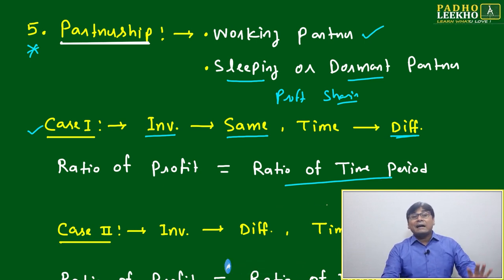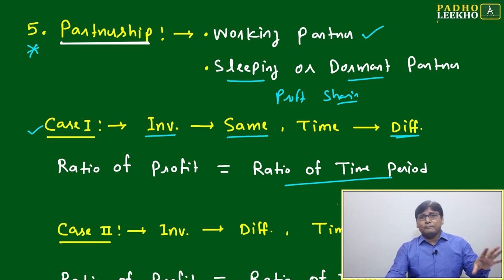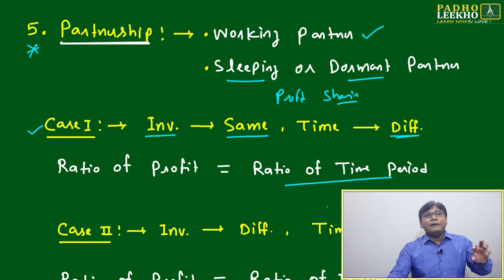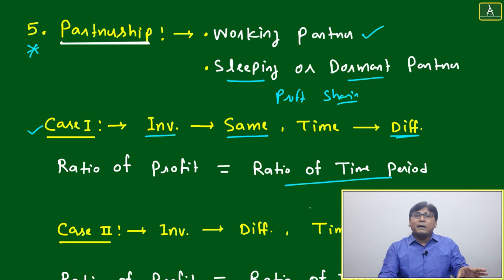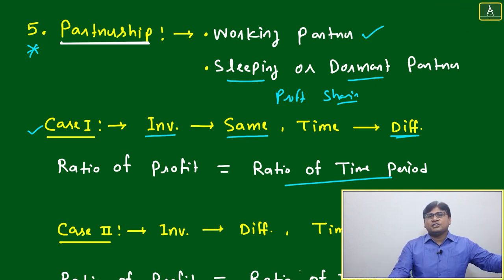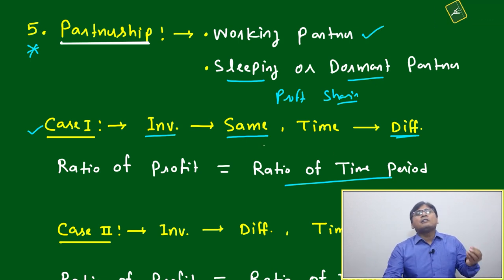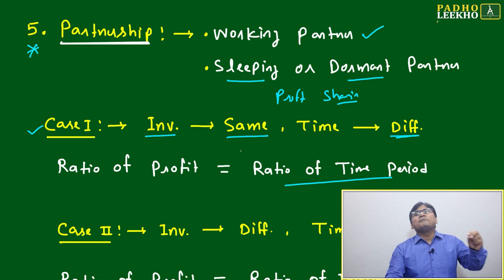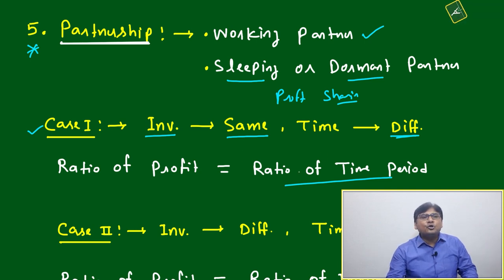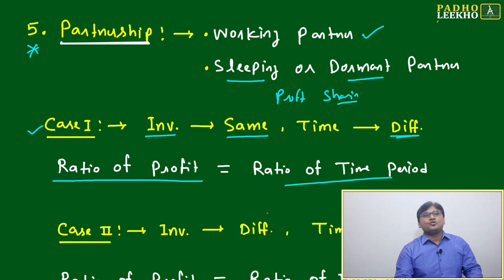This condition applies when all partners are working partners. If any partner is a sleeping or dormant partner, then some condition will be given in the question about how much percentage of profit will be reduced. Here we are assuming all are working partners who invested the same amount but for different time periods — the ratio of those time periods decides the ratio of profit.